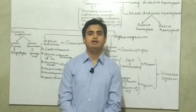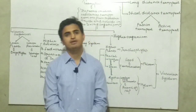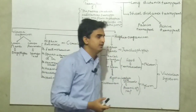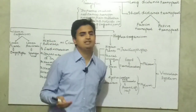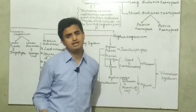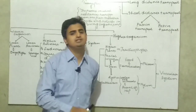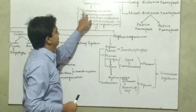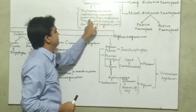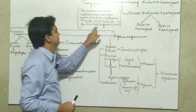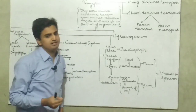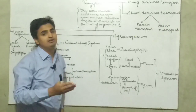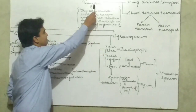Hello, Assalamu alaikum everyone. My name is Adlaman Sumruh and today we will discuss the characteristics of transport. Transport is a process in which substances are transferred from one place to another, inside and outside the living organism. Such processes are called transport — the process in which things move from one place to another, within or from the organism.